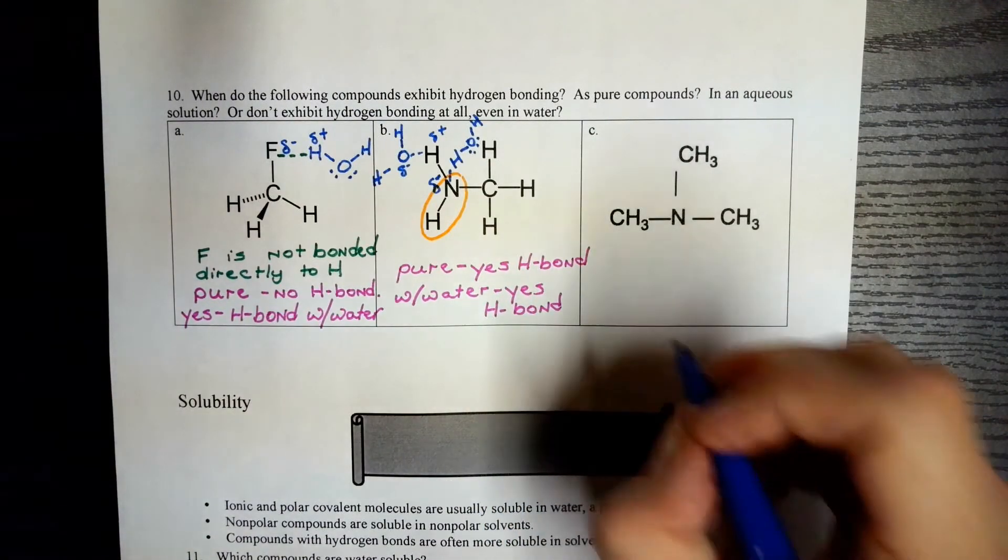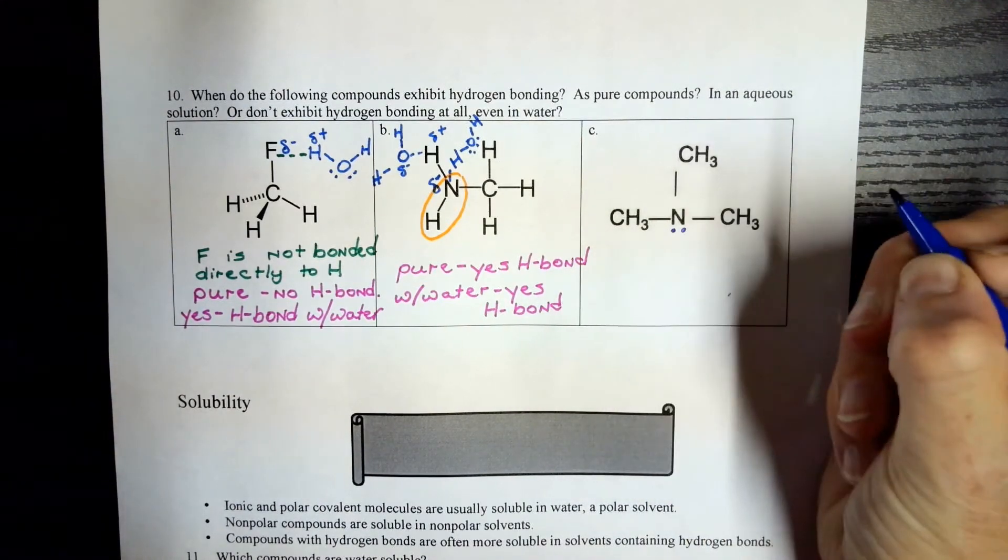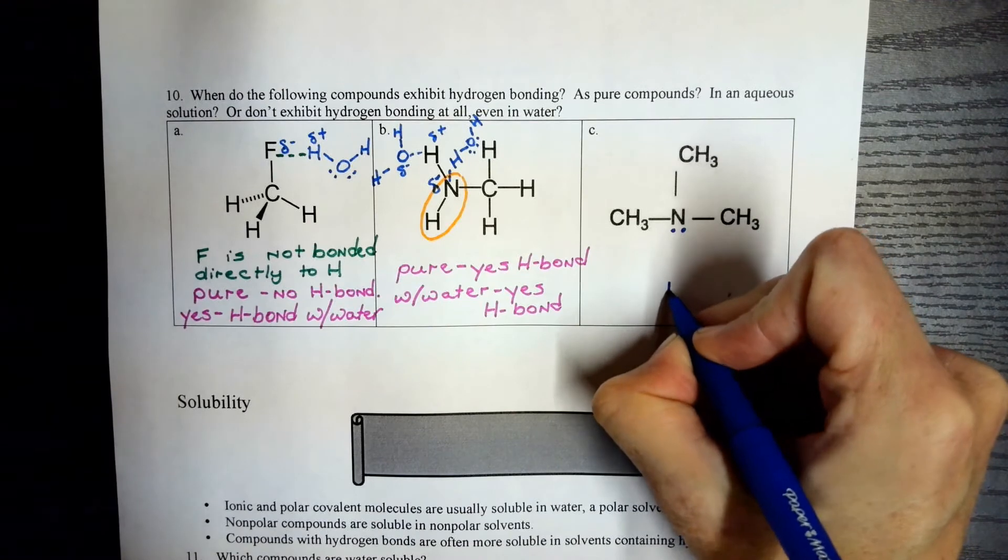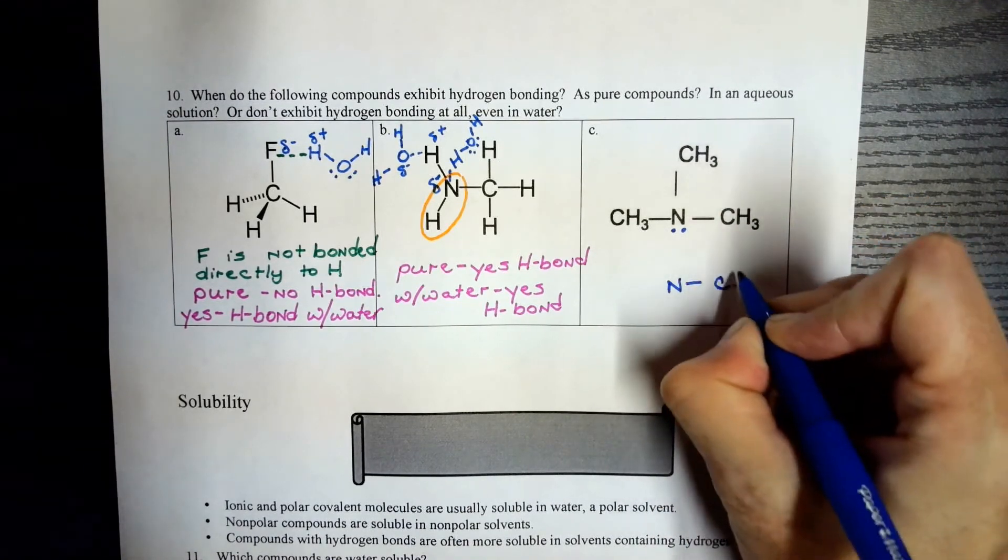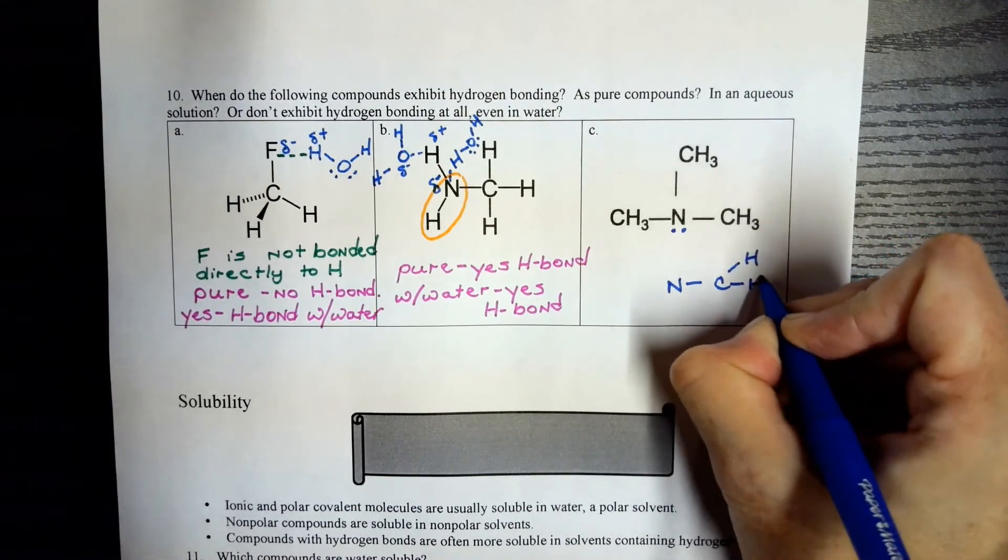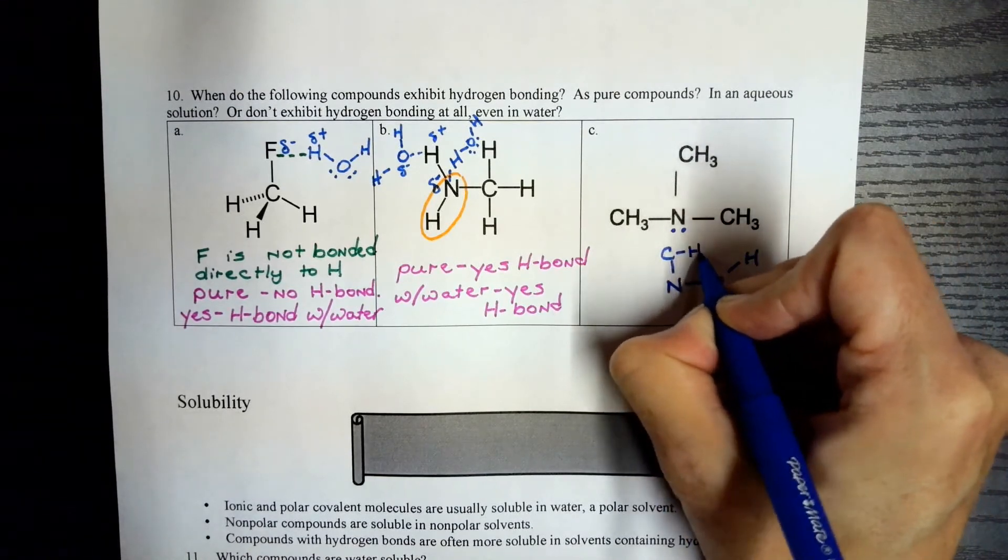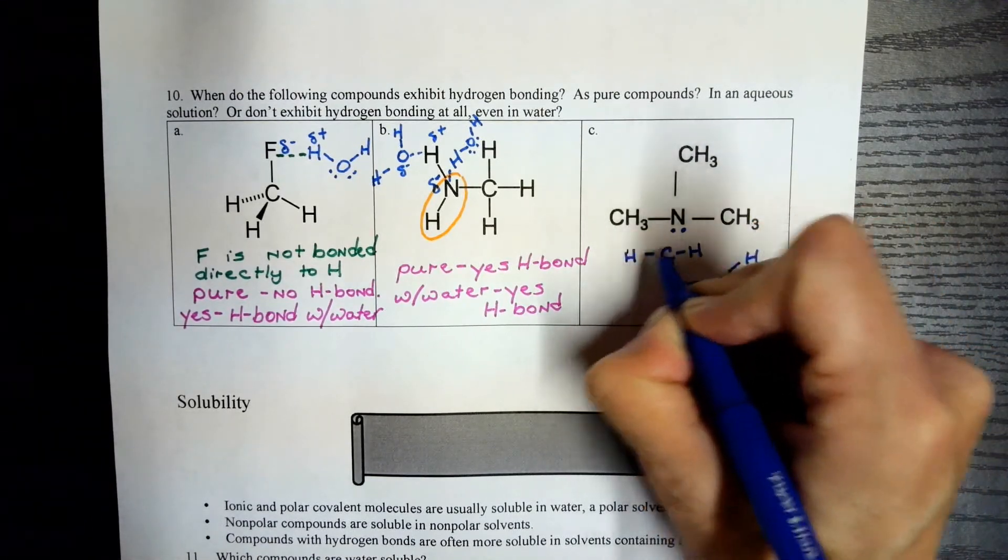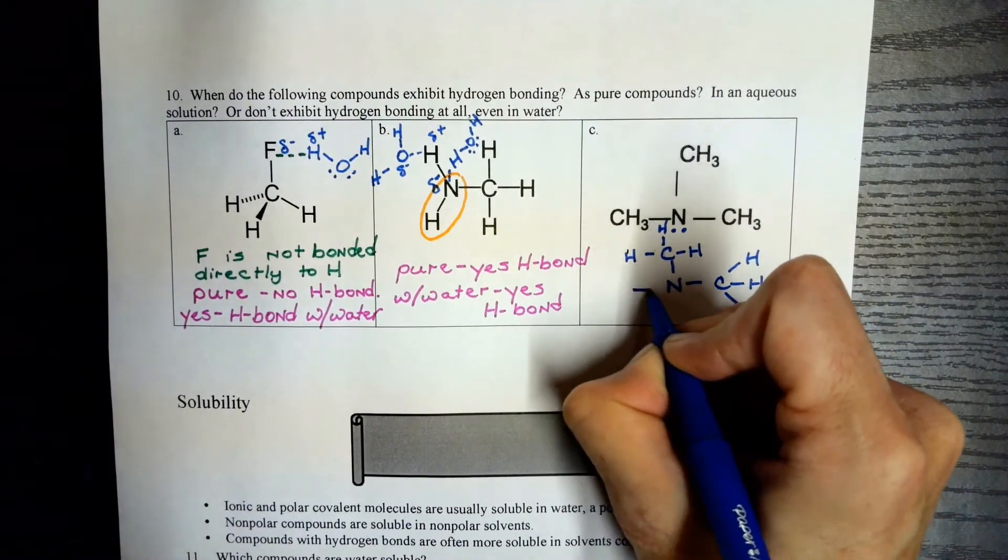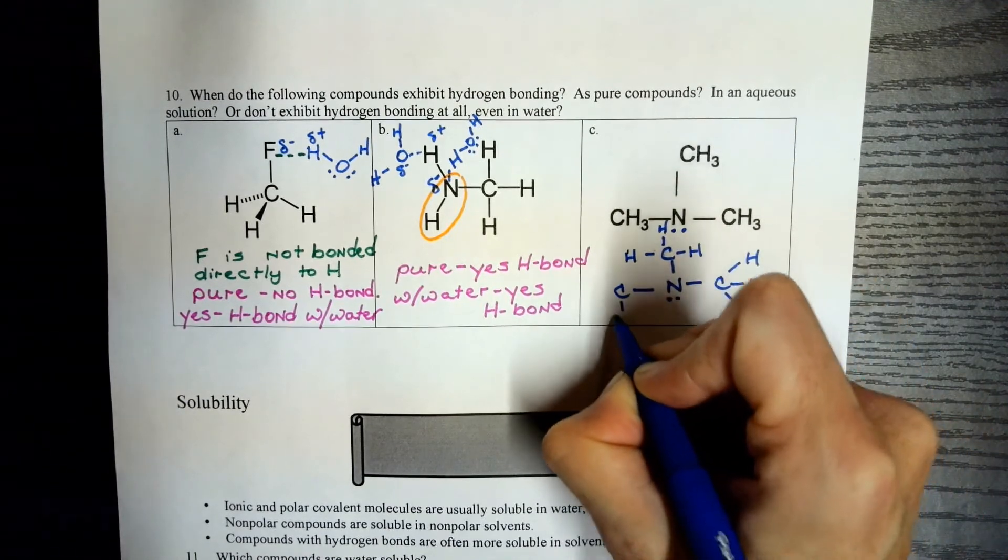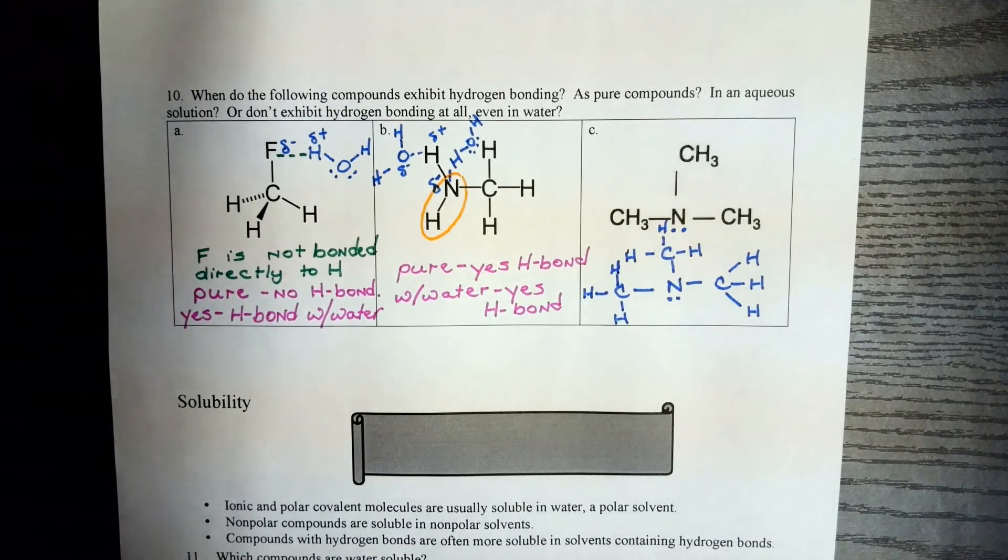The presentation on this last one is a little bit different. A couple things. One, they left out the lone pair on the nitrogen. And they also used a condensed presentation. So each one of these carbons has three hydrogens attached to it. And as the molecules get bigger, the condensed presentation becomes more and more common to the point where you start just drawing lines and the vertexes represent carbon.